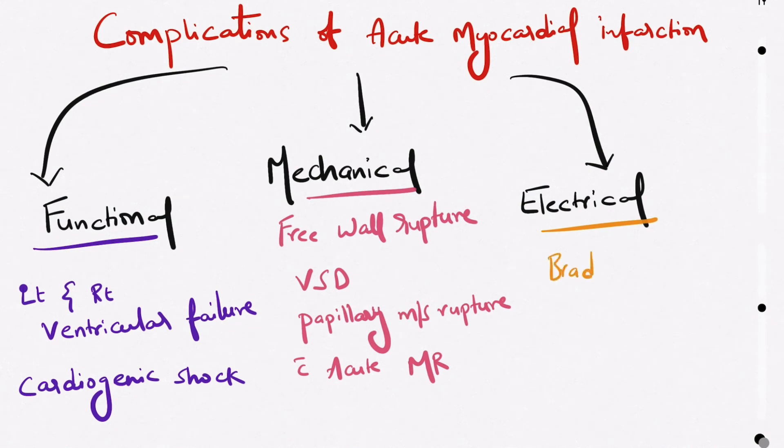Coming to electrical complications, these are bradyarrhythmias and tachyarrhythmias, which impose a risk for embolus formation. Conduction abnormalities will also be there, like bundle branch blocks